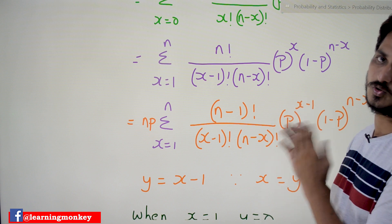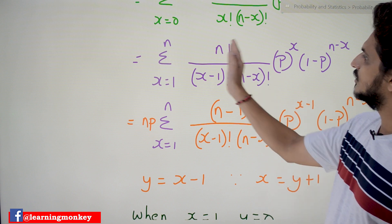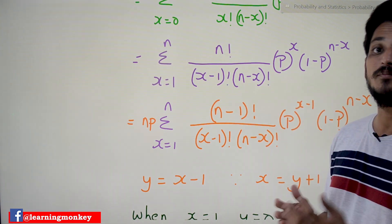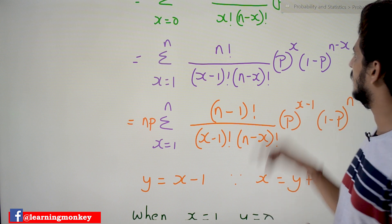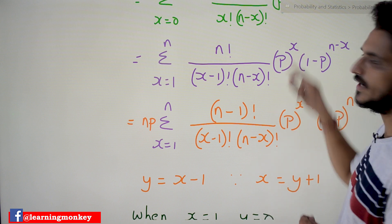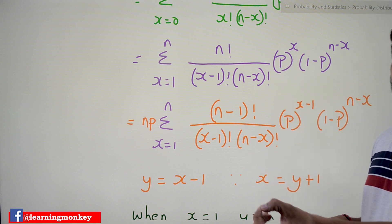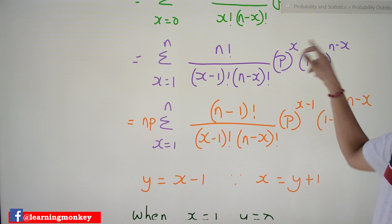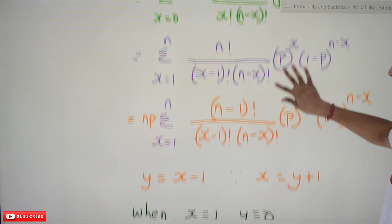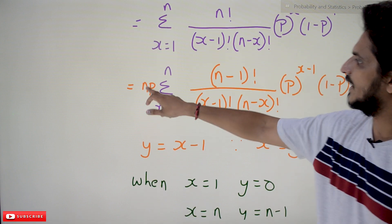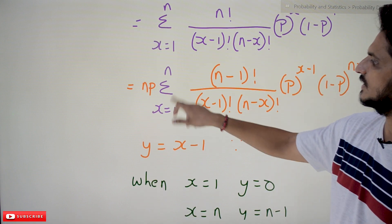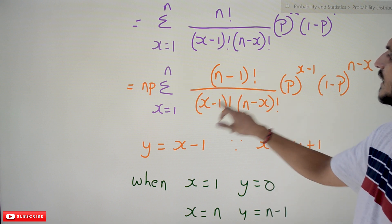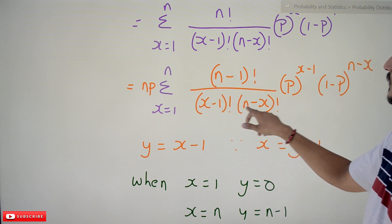Now n! can be written as n · (n−1)!, so we factor out n. From p^x we factor out p, leaving p^(x−1). This gives us n·p · Σ (x=1 to n) of [(n−1)! / ((x−1)! · (n−x)!)] · p^(x−1) · (1−p)^(n−x).